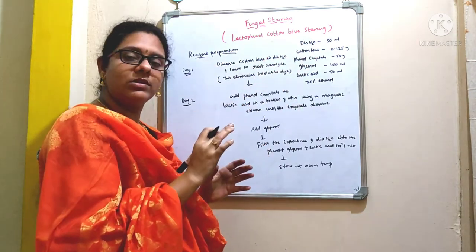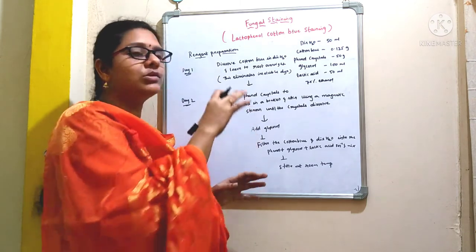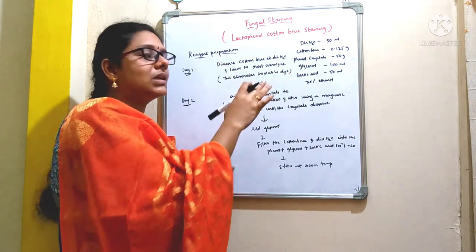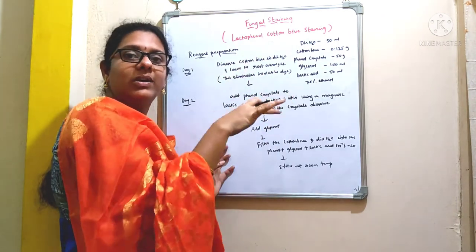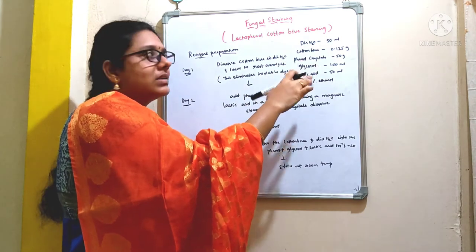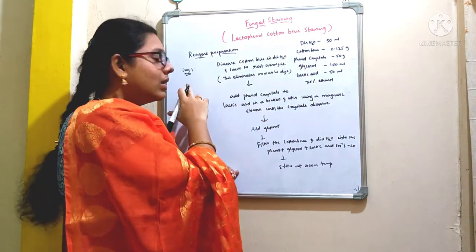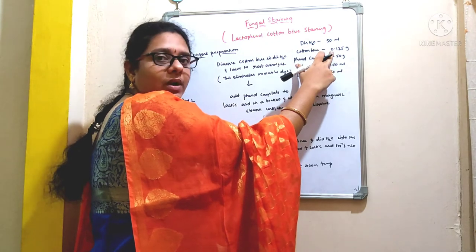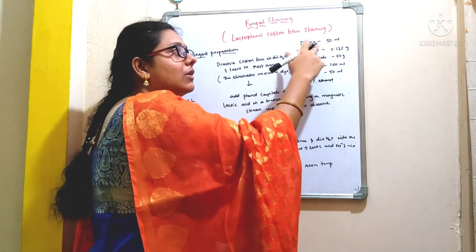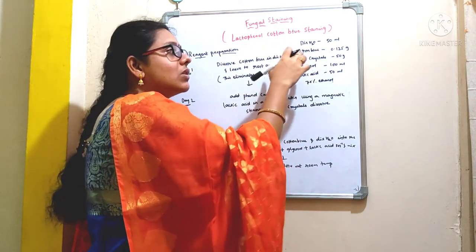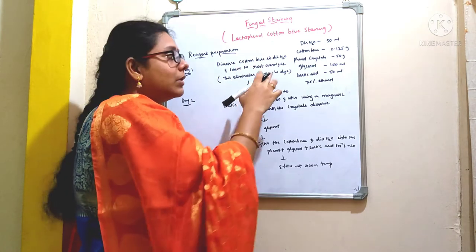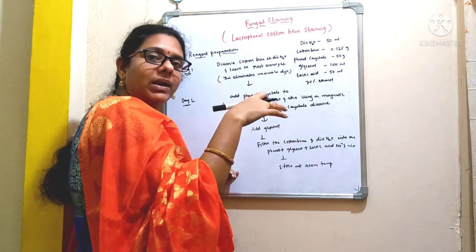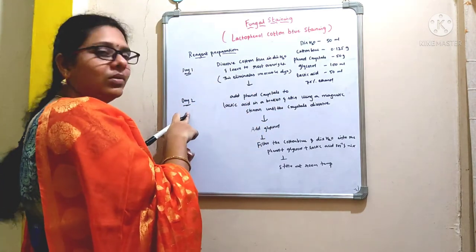If you want to perform this experiment today, you are supposed to prepare this dye two days before. Leave it undisturbed for two days to allow maturation and proper dissolving of all ingredients. On day one, dissolve 0.125 grams of cotton blue in 50 ml of distilled water. Leave that solution undisturbed overnight — this eliminates the insoluble dye and ensures proper mixing.